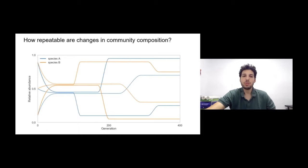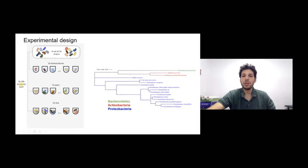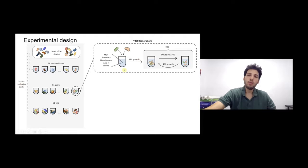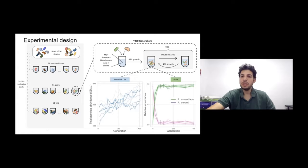We took a set of 16 bacterial species representing three phyla and cultured them either in monoculture, or in 51 pairs and 51 trios. With multiple replicates to assess repeatability, we cultured them in minimal media and propagated them through multiple growth-dilution cycles for approximately 400 generations. During that time we measured total OD approximating overall biomass, and also looked at the relative abundance and composition of the community by plating.